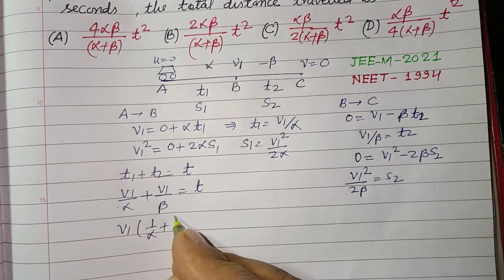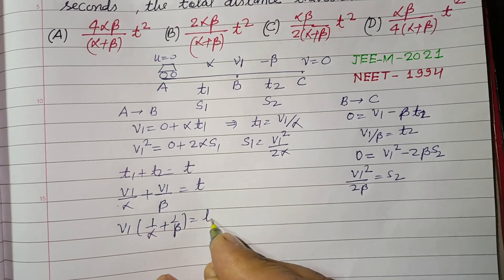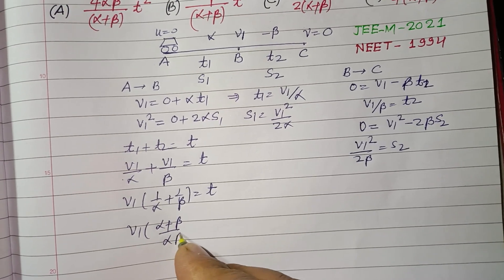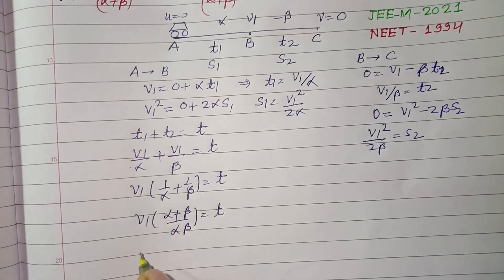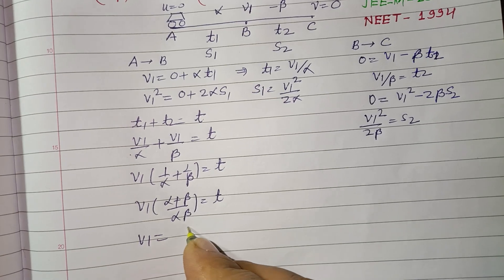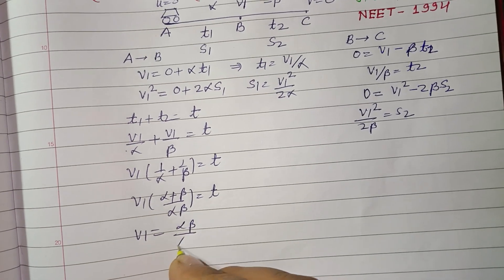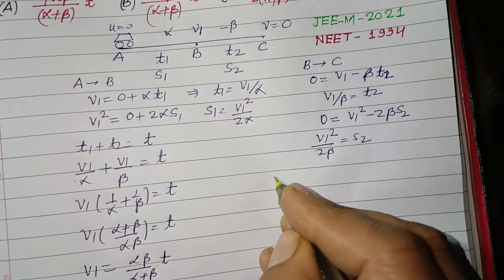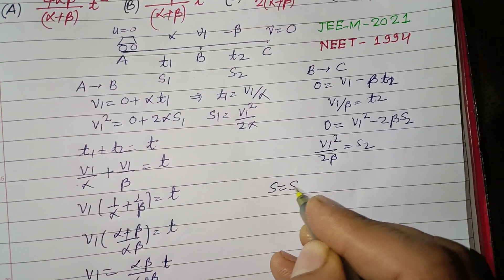So v₁ is common: 1/α + 1/β = t/v₁, which becomes (α + β)/(αβ) = t/v₁. Therefore, v₁ = αβt/(α + β). Now, s = s₁ + s₂.